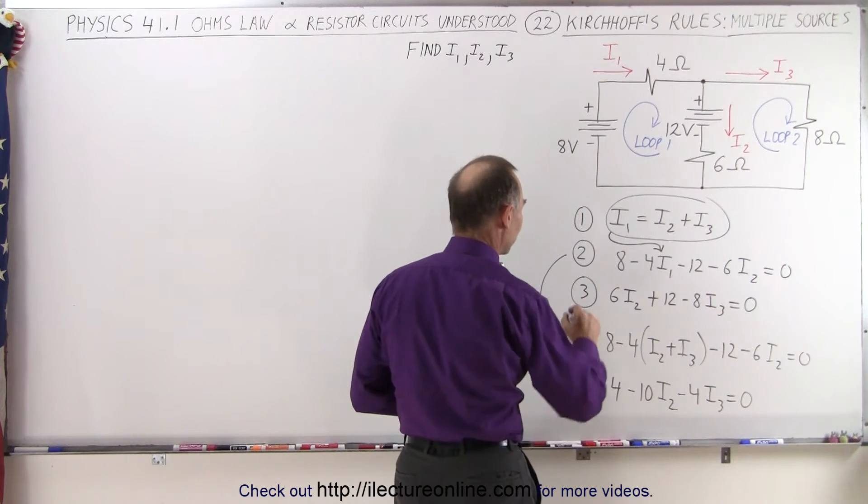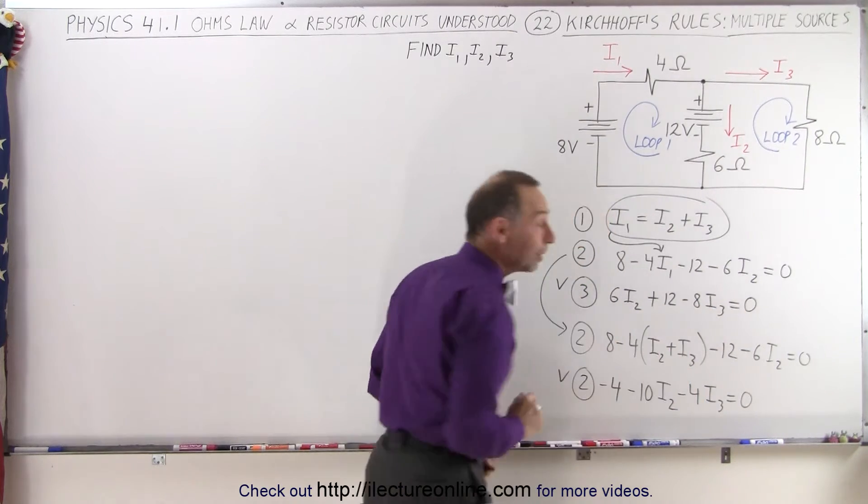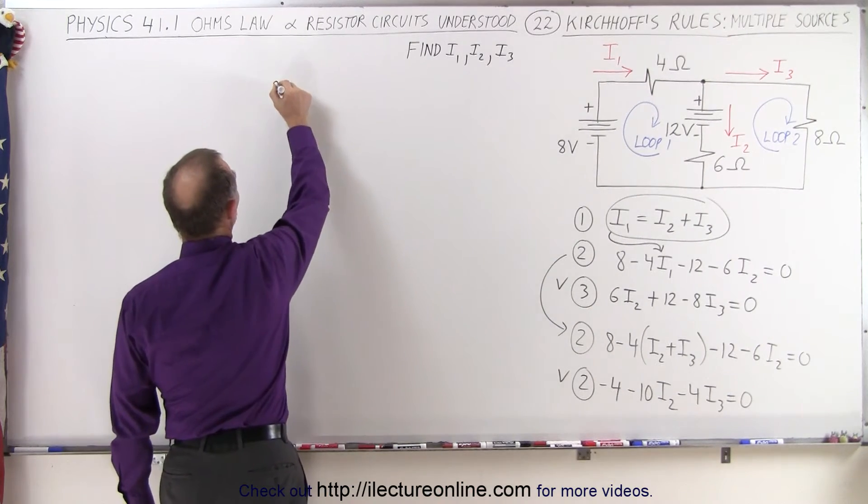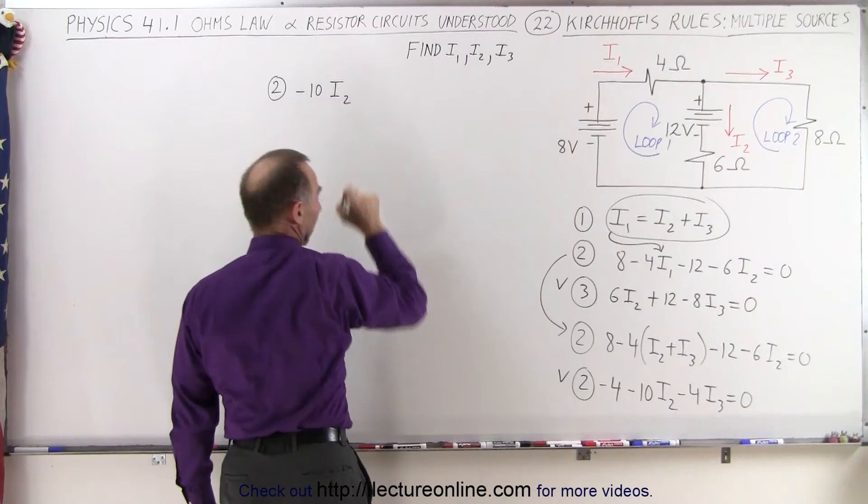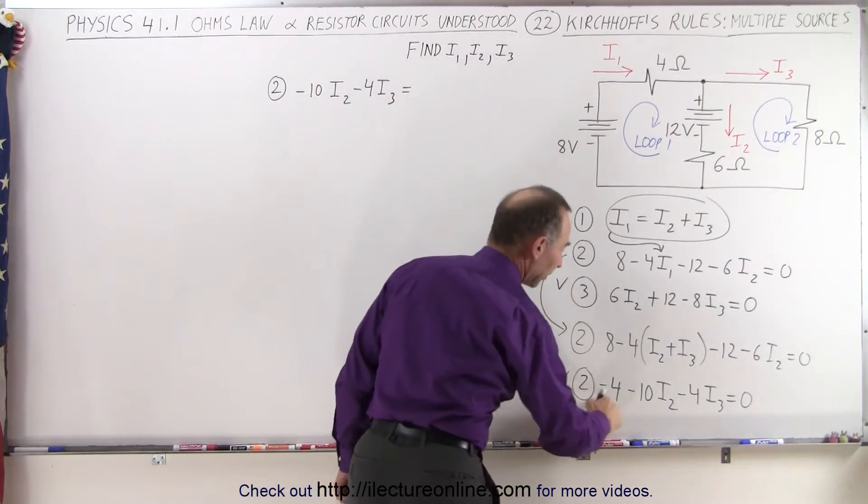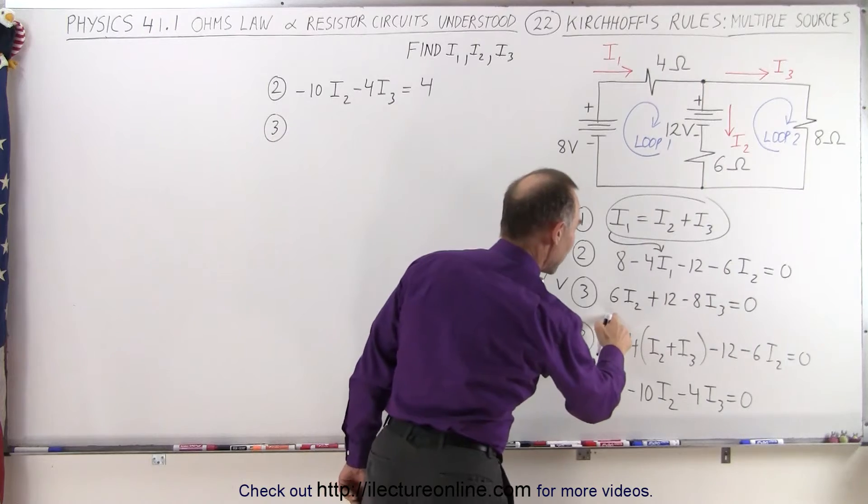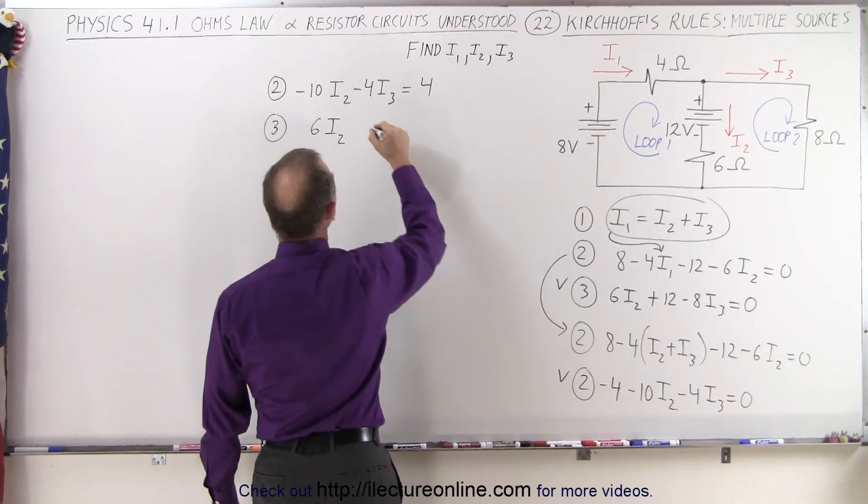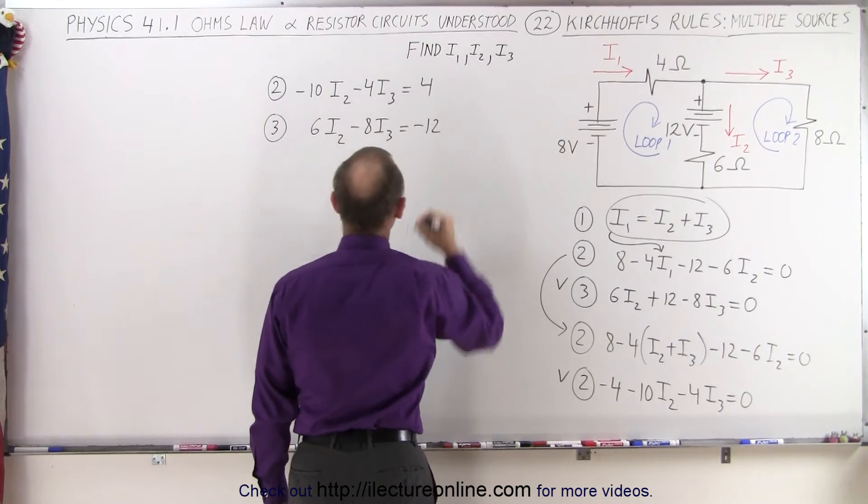So now we have two equations. We have the third equation and the second equation. Notice that these two only have I2 and I3 in them. So now I have two equations and two unknowns. Let's come up here and continue with those. So equation number two, we'll have minus 10I2, and then we have minus 4I3 is equal to, when we bring the minus 4 across, it becomes plus 4. And then our third equation, here we have a plus 6I2, and we have a minus 8I3, and that is equal to, when we bring the 12 across the other side, we get a minus 12.